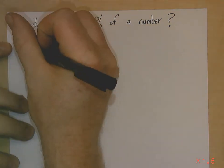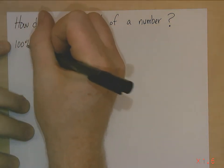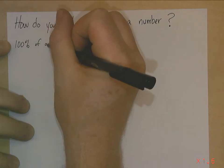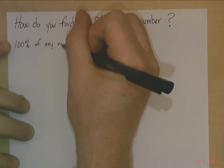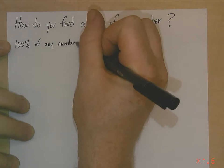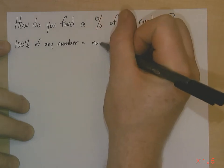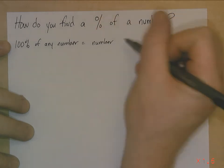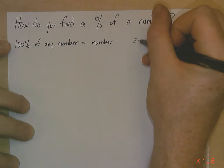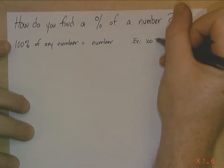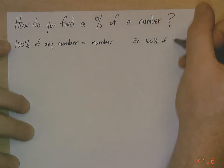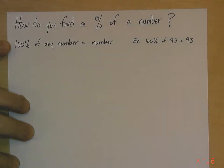If we look for 100% of a number, 100% of anything, of any number, just equals that number. It's the same number. So 100% of, say, 93 equals 93. Not too difficult.